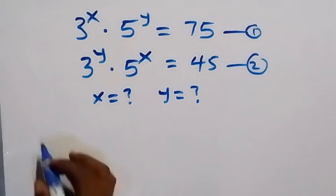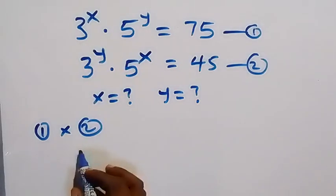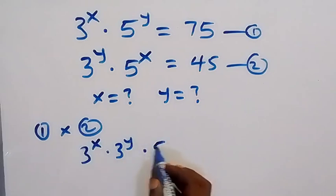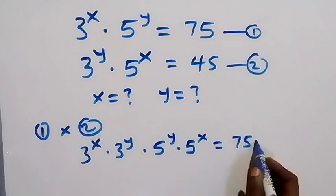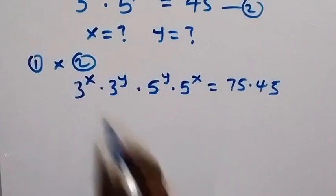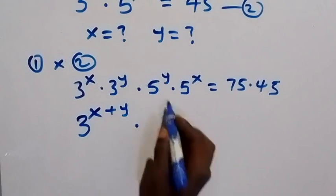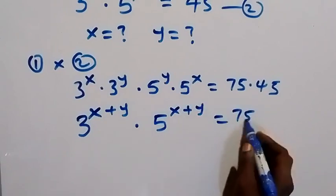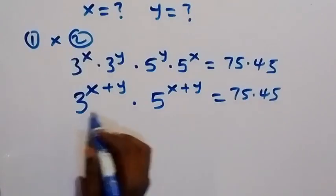From here, let's multiply equation one and two — so equation one times equation two. Then we have 3 raised to power x from equation one, multiplied by 3 to power y in equation two. Also multiply by 5 raised to power y in equation one, times 5 raised to power x in equation two, which equals 75 in equation one times 45 in equation two. From here we can apply the law of indices — same base 3, we sum the powers — and then we bring 3 and 5 together.